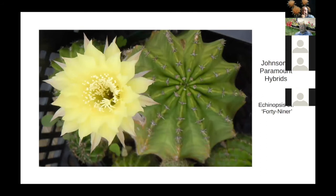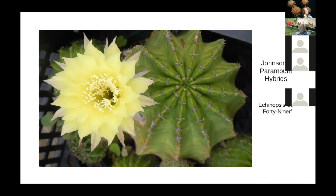This one is Harry's favorite yellow one — called '49er.' It offsets reasonably well, but not profusely. A viewer who received an offset of this researched it and found that '49er' is a reference to the California Gold Rush of 1849 — a golden flower. Dave confirms that makes sense. So 49er is Harry's only yellow Paramount. A viewer asks how Harry got specific colors like yellow — Dave says Harry never revealed what parent plants he used, but for yellow he probably used a white and lightened an orange, or possibly used the yellow Lobivia arachnacantha.